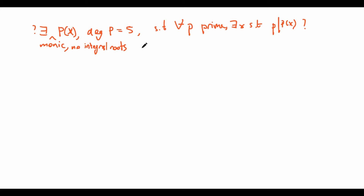First, take a moment and pause the video and try to figure out: does there exist such a polynomial, and if so, can you prove it? Now let's come back and I'll show you the solution. The answer is there does exist a polynomial of degree 5 that satisfies all these conditions. To prove this, let's first ignore the degree 5 condition and just try to find some sort of example such that all primes p can divide this polynomial.